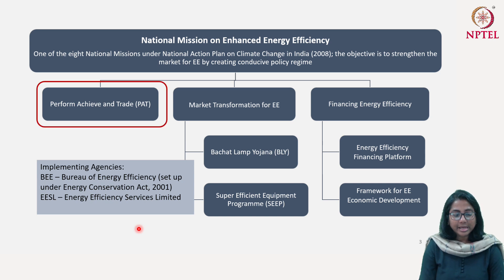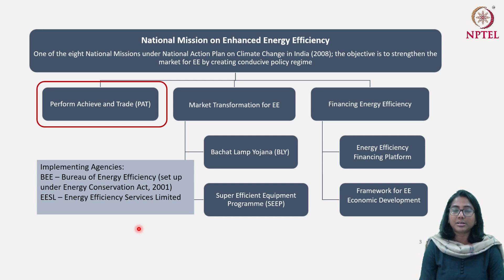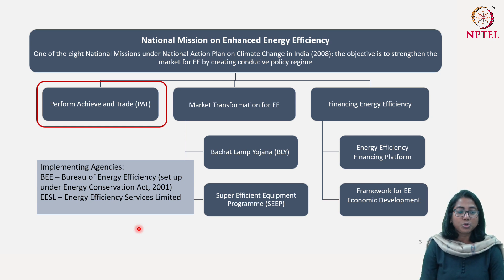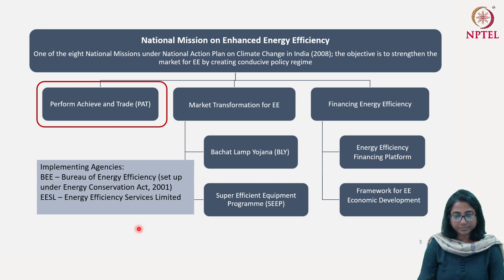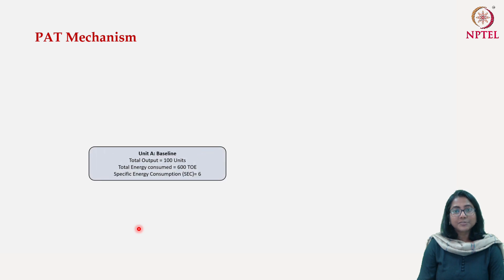What we are going to do here is look at a couple of thrust areas of the Bureau of Energy Efficiency which have come up with very significant energy efficiency policies with visible outcomes. First, we are going to look in detail at the policy called Perform, Achieve and Trade in India. Let us first look at what is the mechanism of Perform, Achieve and Trade.